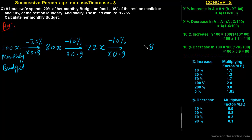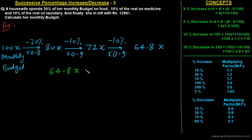63 plus 1 gives 64.8x. So after expenditure on laundry she is finally left with 64.8x. Initially she was having 100x. Now it is given that finally she is left with rupee 1296, so this amount — 64.8x — is equivalent to 1296.